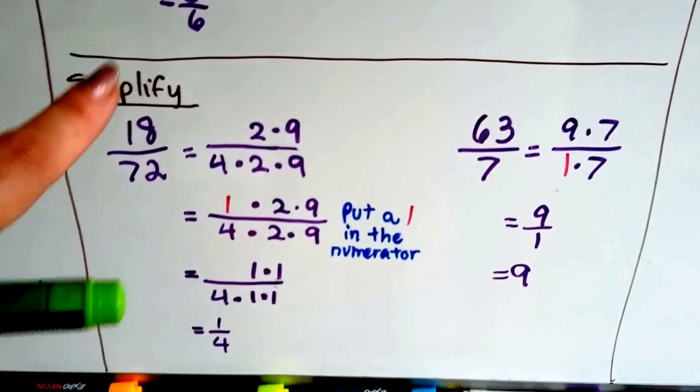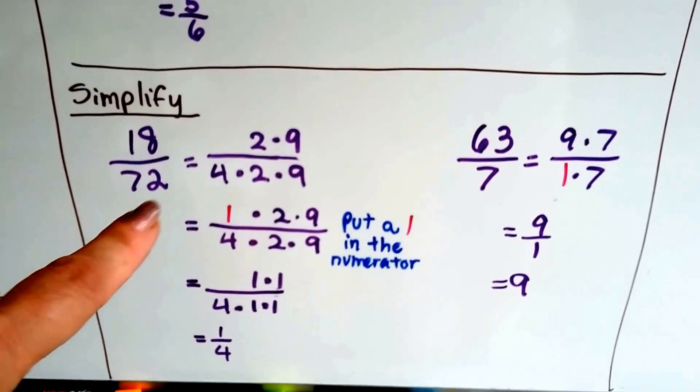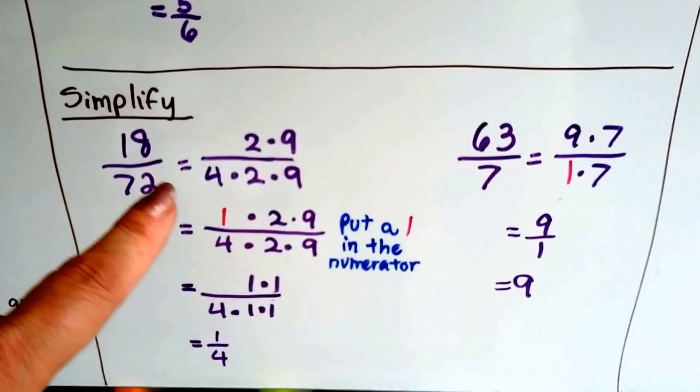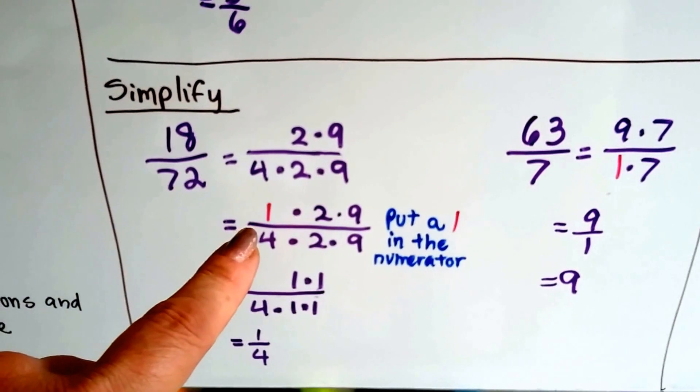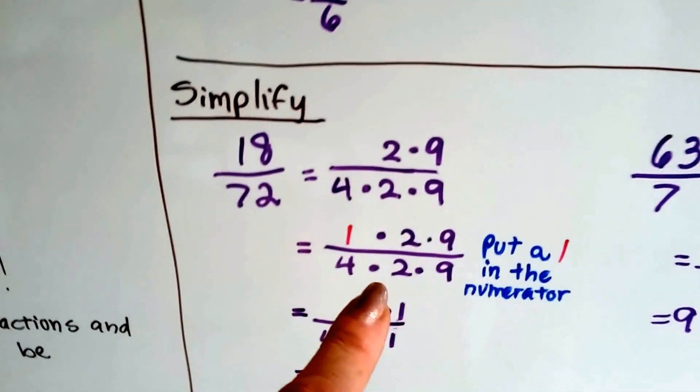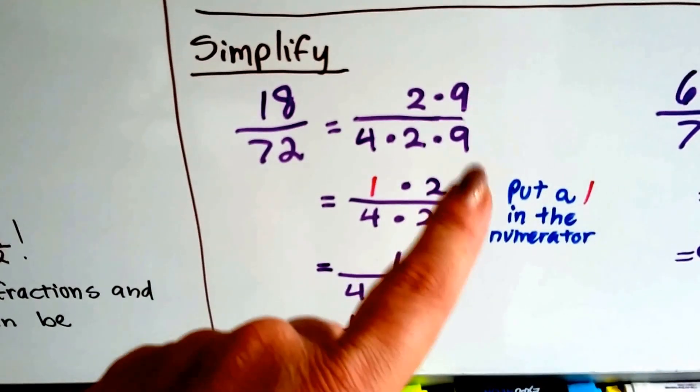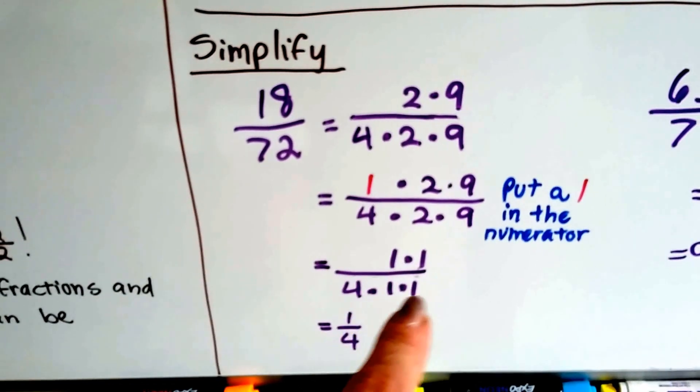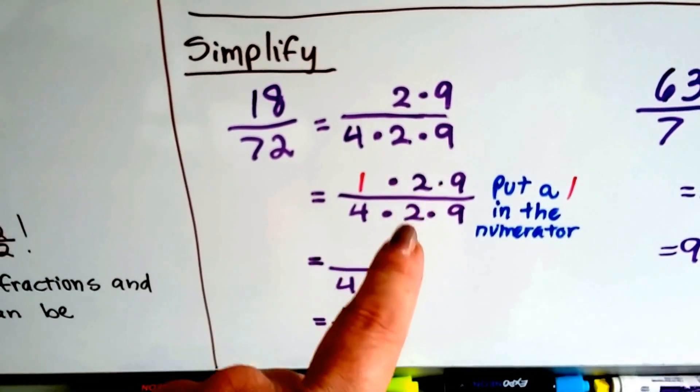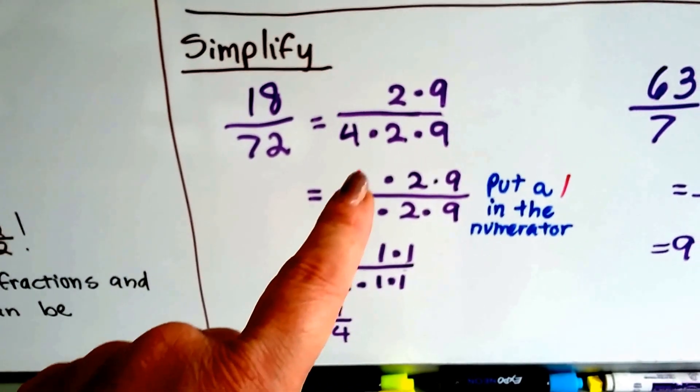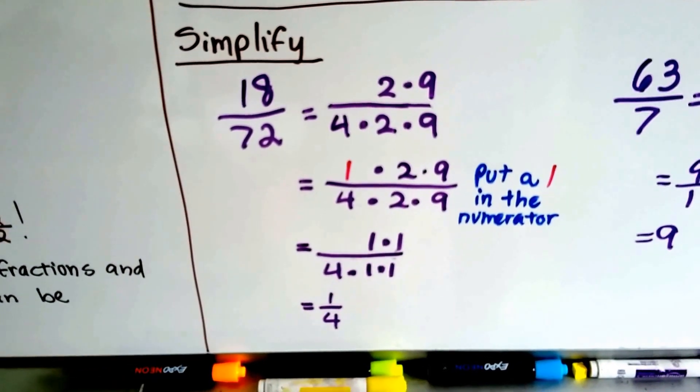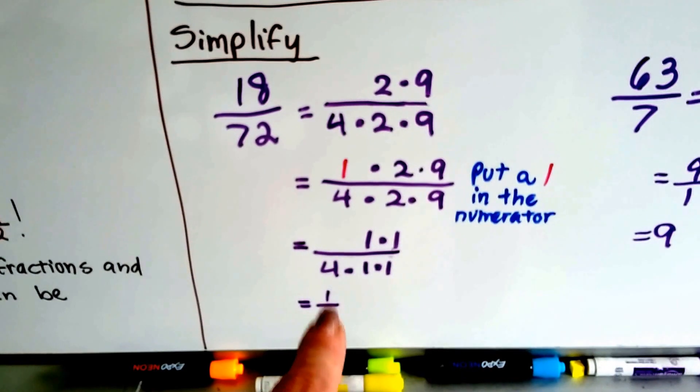How about this one? We've got 18 over 72. We've got 2 times 9 is 18, and 4 times 2 times 9 is 72. So what we do is we get rid of the 2 and the 9. It's almost like we're turning that into a 1 and that into a 1. And we put a 1 in as the numerator. We end up with 1 fourth.